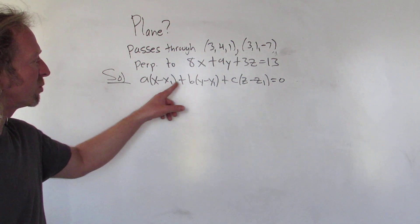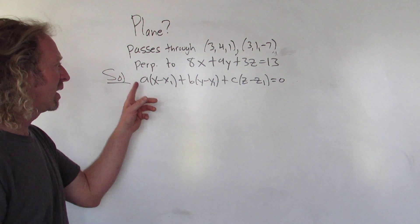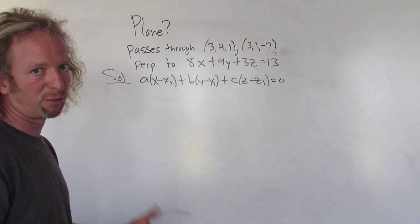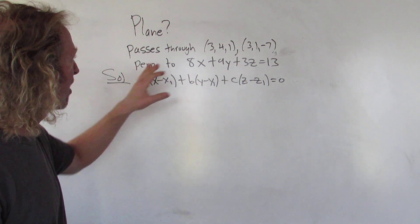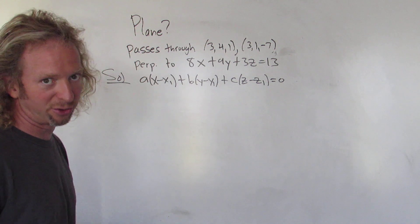Okay, so x1, y1, z1, that's always a point on our plane. And then a, b, c, that's going to be our normal vector, so that's what we need. So we already have the points, we just need the normal vector.